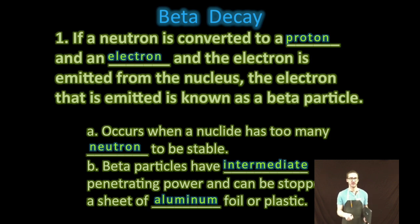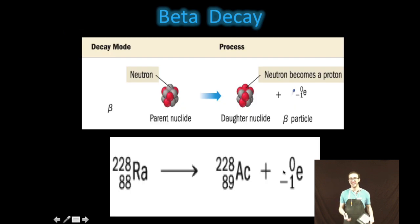Beta particles have an intermediate penetrating power; you can stop them with a sheet of aluminum foil or plastic. Here's a representation of beta decay in both a particulate representation and also in an equation format. Notice in the particulate representation that one of our neutrons becomes a proton and an electron. That electron, also known as a beta particle, is emitted from the nucleus.